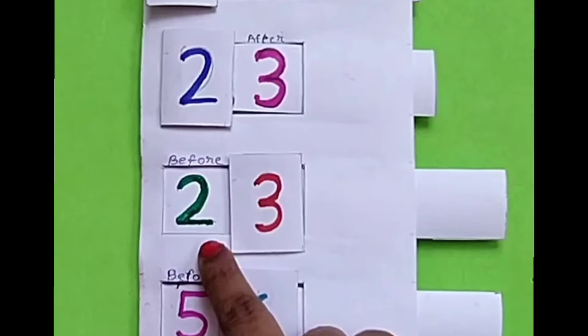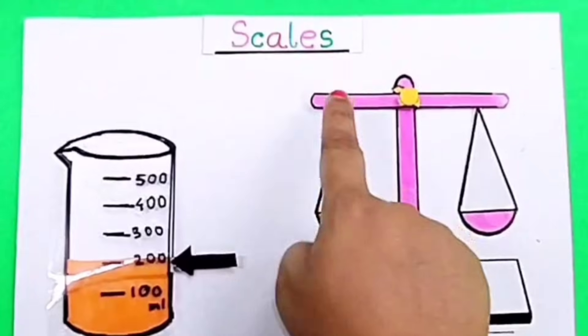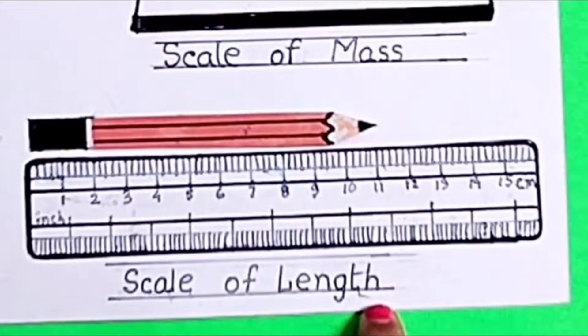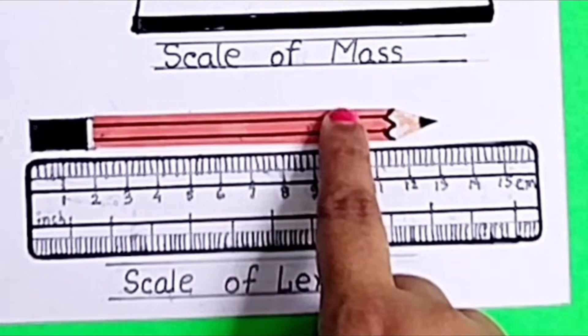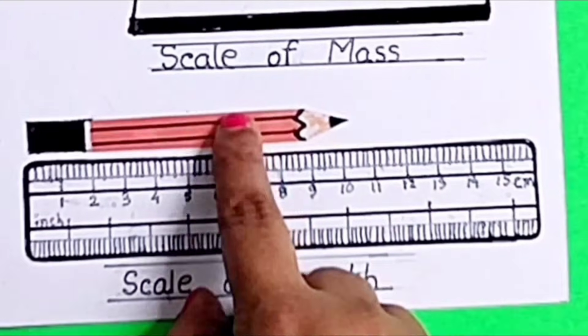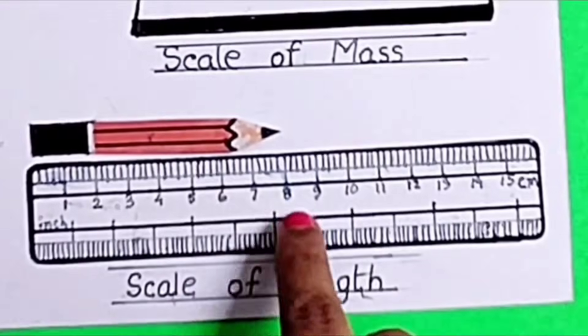This is a very easy to make TLM. Scale for length. This pencil is 11 cm. Now it is 13 cm, and now it is 8 cm.